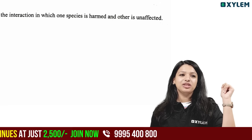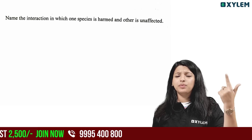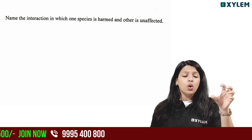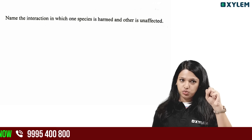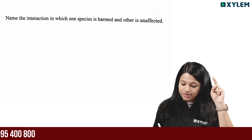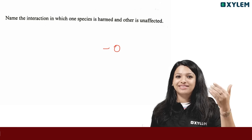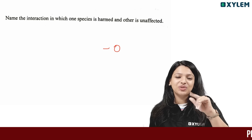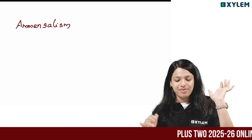In our organisms and population chapter, one species is harmed and the other is unaffected — negative or zero. We have to learn that this is amensalism. Easy peasy, amensalism.